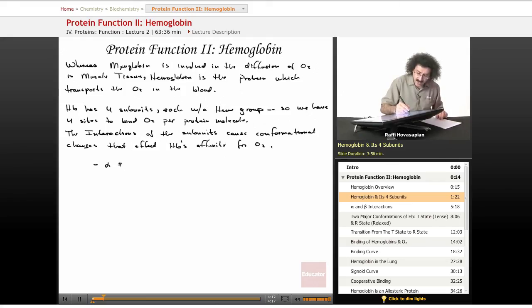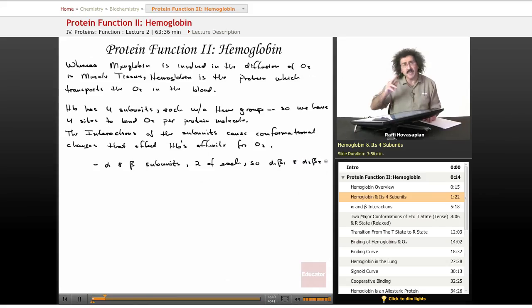Hemoglobin has alpha and beta subunits, two of each. So we have an alpha 1 beta 1 and an alpha 2 beta 2. The alpha has 141 amino acid residues and the beta has 146 amino acid residues.